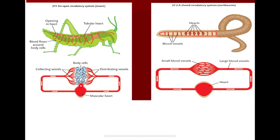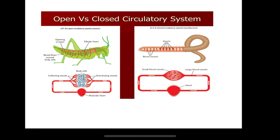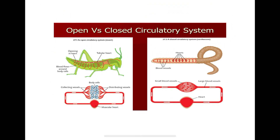In the open circulatory system, like in arthropods, there is a cavity filled with blood and direct contact between blood cells and tissues. The closed circulatory system is more efficient than the open circulatory system.